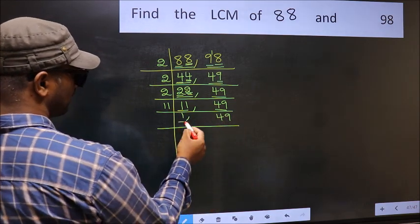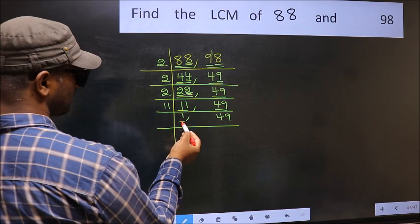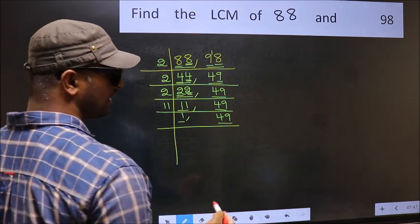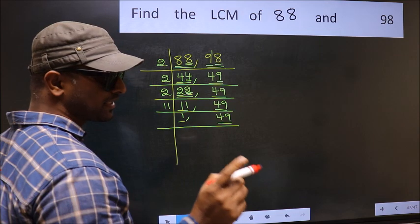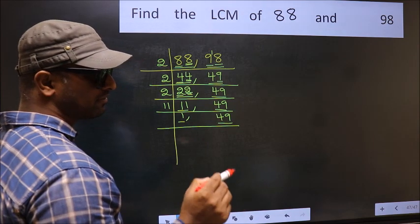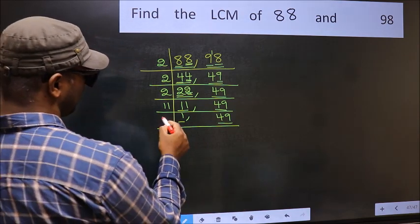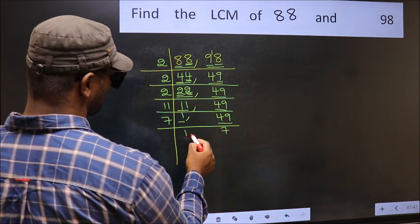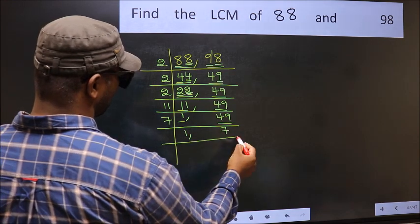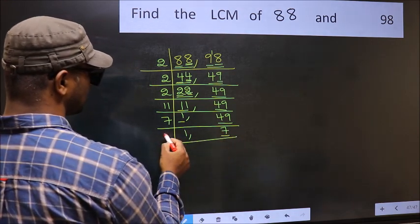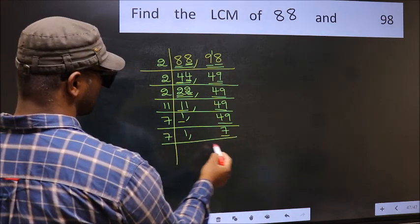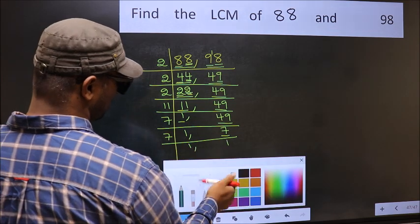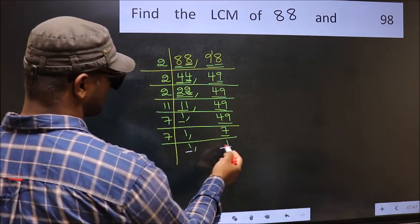Now we got 1 here, so focus on the next number 49. Always remember 7 times 7 is 49. Now we have 7 — 7 is a prime number, so 7 once is 7. We got 1 in both places.